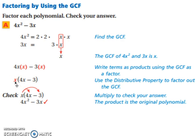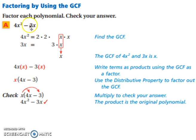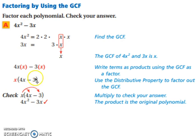I like to think of it as doing the distributive property backwards. So if you take out an x, x times what gives us 4x squared? Well, 4x. And then x times what gives us 3x? Well, x times 3 is 3x. You can always double check: x times 4x is 4x squared, and x times negative 3 is minus 3x, which is what you started with. So your factored version is x times the quantity 4x minus 3.